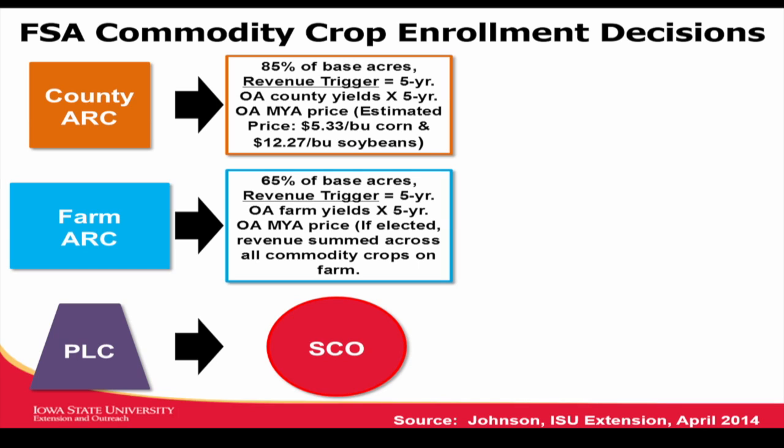Cotton gets its own product called the Stacks. But there's another interaction: if you elect PLC, then you can also use SCO — Supplemental Coverage Option. How is that different from ARC? Well, county ARC is a lot like SCO — they both use county yields. But SCO uses traditional crop insurance prices, and there's no Olympic average in SCO; it's an annual decision. SCO will be an add-on to your existing crop insurance. I don't think it's going to be viewed as a good substitute for crop insurance. Most farmers are going to use crop insurance and SCO, especially if you're not at the 80 or 85 percent level of coverage, because they're going to use SCO to try to buy up their coverage — but it's going to be a county yield, and the government pays 65 percent of the premium.